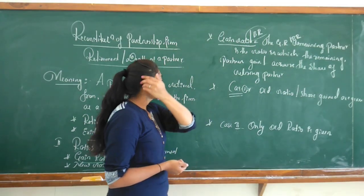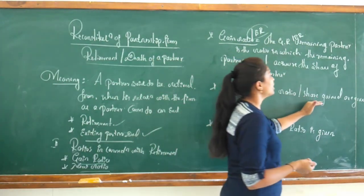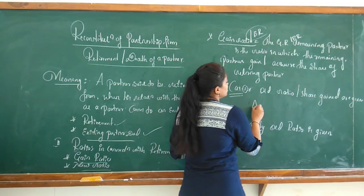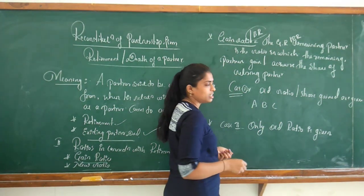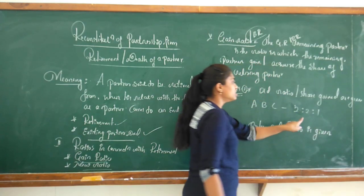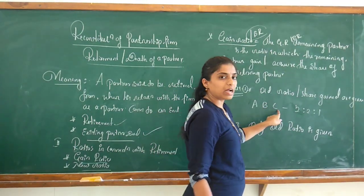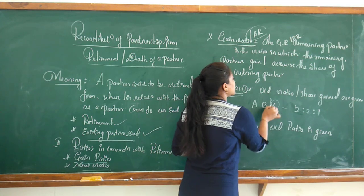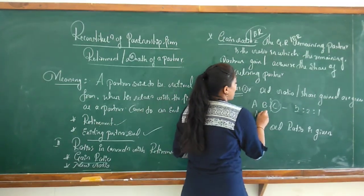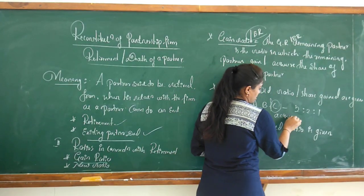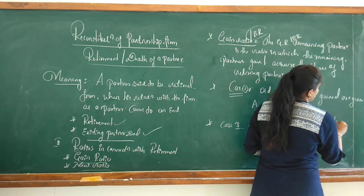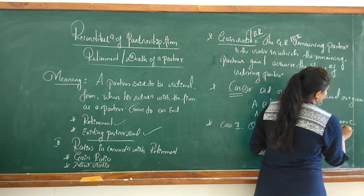The first case: the old ratio and the share gained are given directly in the problem. For example, A, B, and C are partners with an old profit-sharing ratio of 2:2:1. C retires, and A and B acquire or gain C's share in the ratio of 3:1.